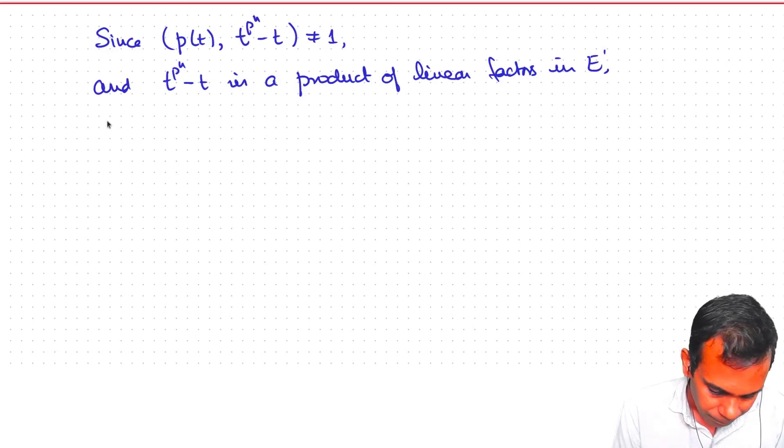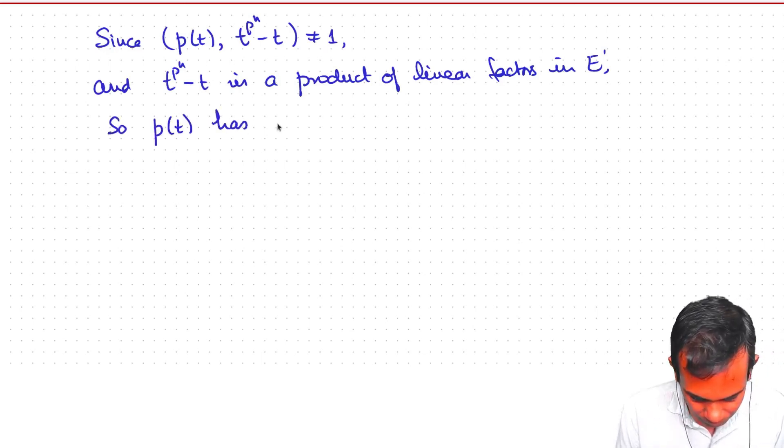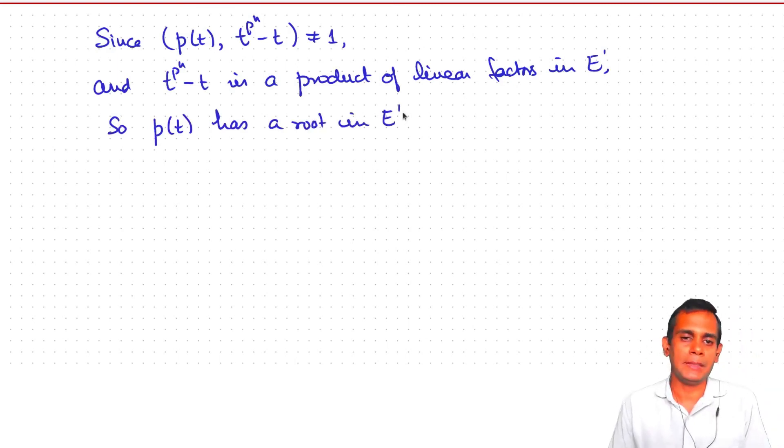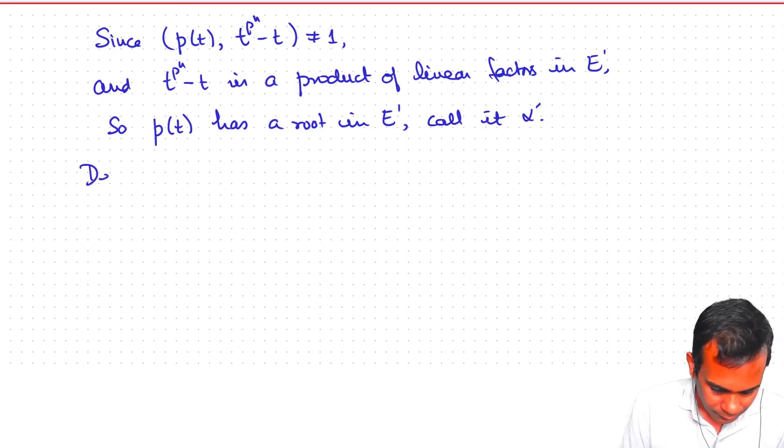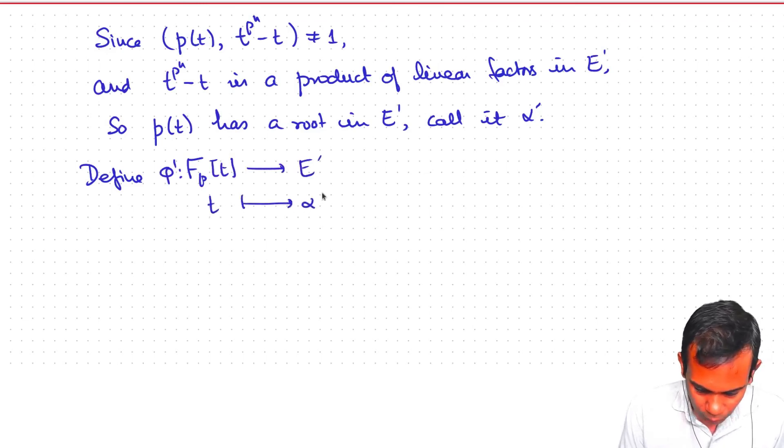In fact, one of those linear factors must also divide Pt. So Pt has a root in E prime, call it alpha prime. And now you define phi prime from Fp[T] to E prime by taking T to alpha prime.